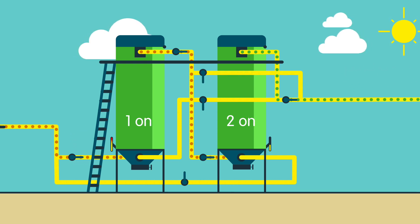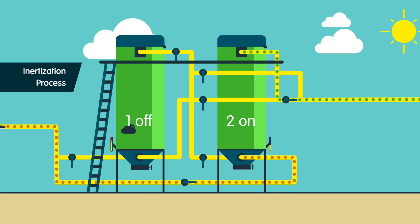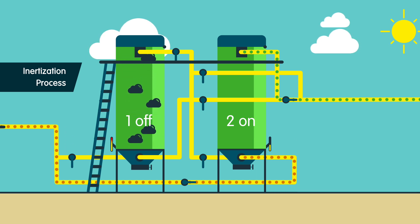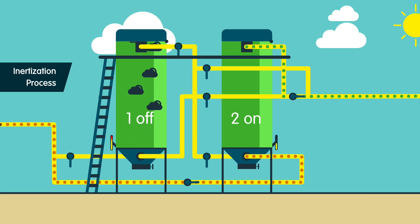While the second vessel continues removing impurities, the first vessel is inertized, a process in which we purge the remaining biogas from the first vessel by injecting inert gases.